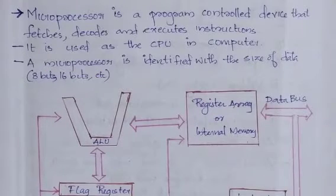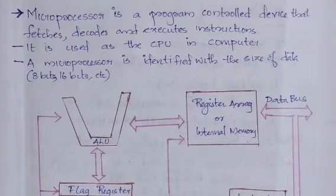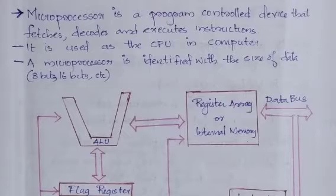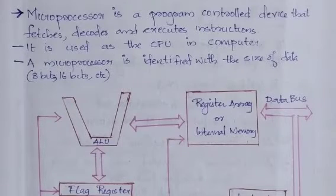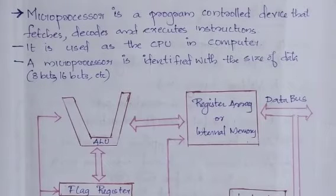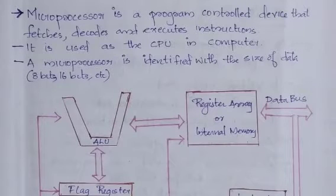It is one of the interesting subjects of engineering. The syllabus of module 1 covers: evolution of microprocessors, the 8086 microprocessor, its architecture and signals, memory organization, minimum and maximum mode of operation, minimum mode timing diagram, and comparison of 8086 and 8088.